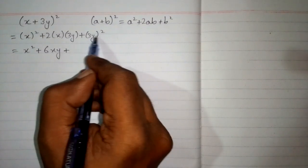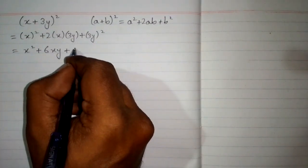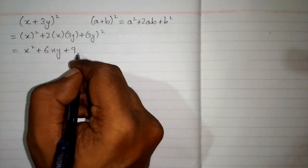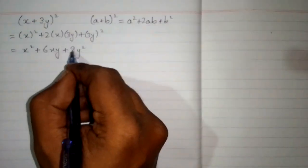Square of 3 is 9, and the square of y is y². Here we are applying the formula (ab)^n is equal to a^n and b^n.